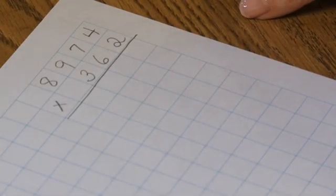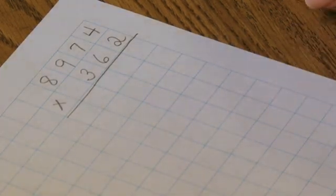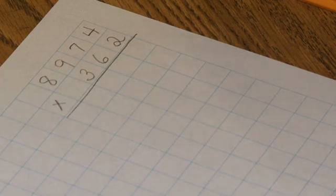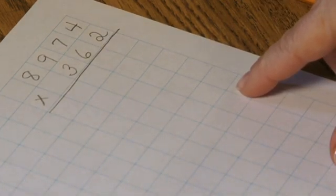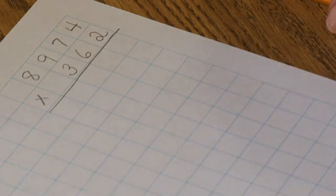This is multiplication on paper. This is all done abstractly. All the work that we've been doing in multiplication, first with the checkerboard, then with the flat bead frame, and then with the bank game, has prepared us so that now we can do this multiplication work abstractly and just record what we're thinking about on paper.